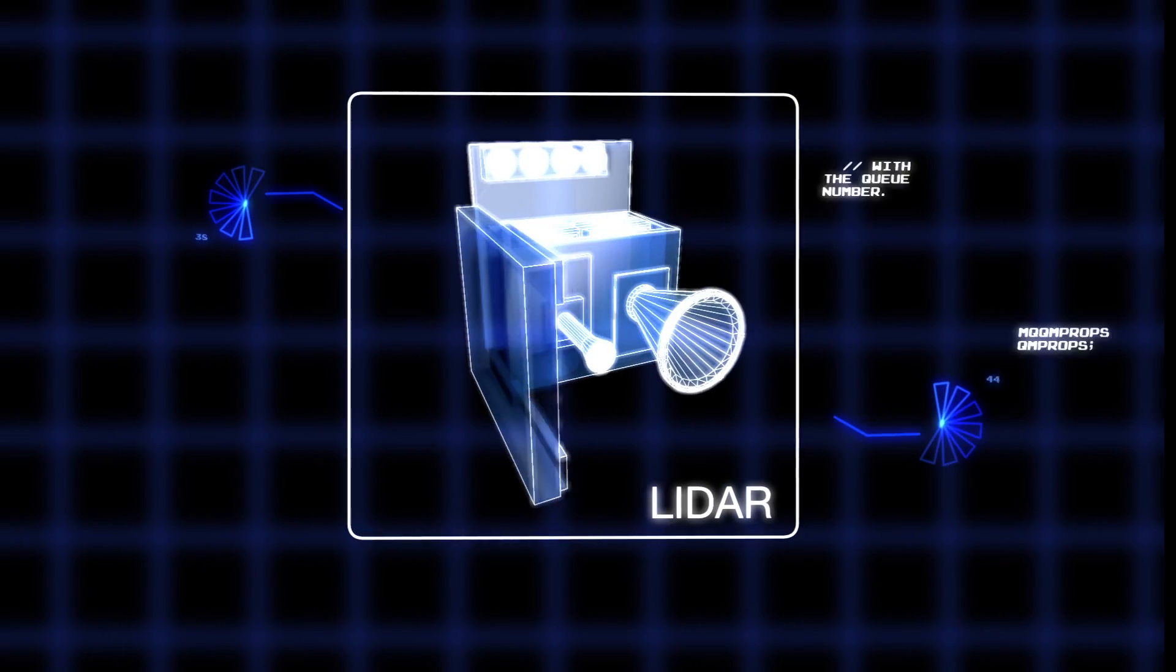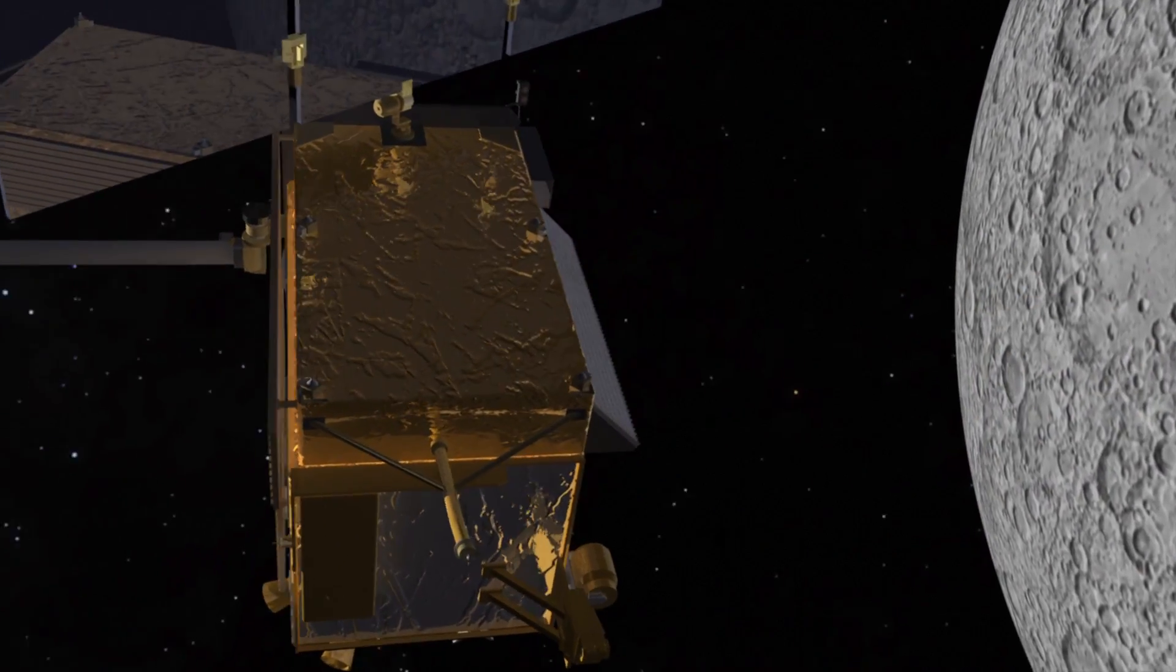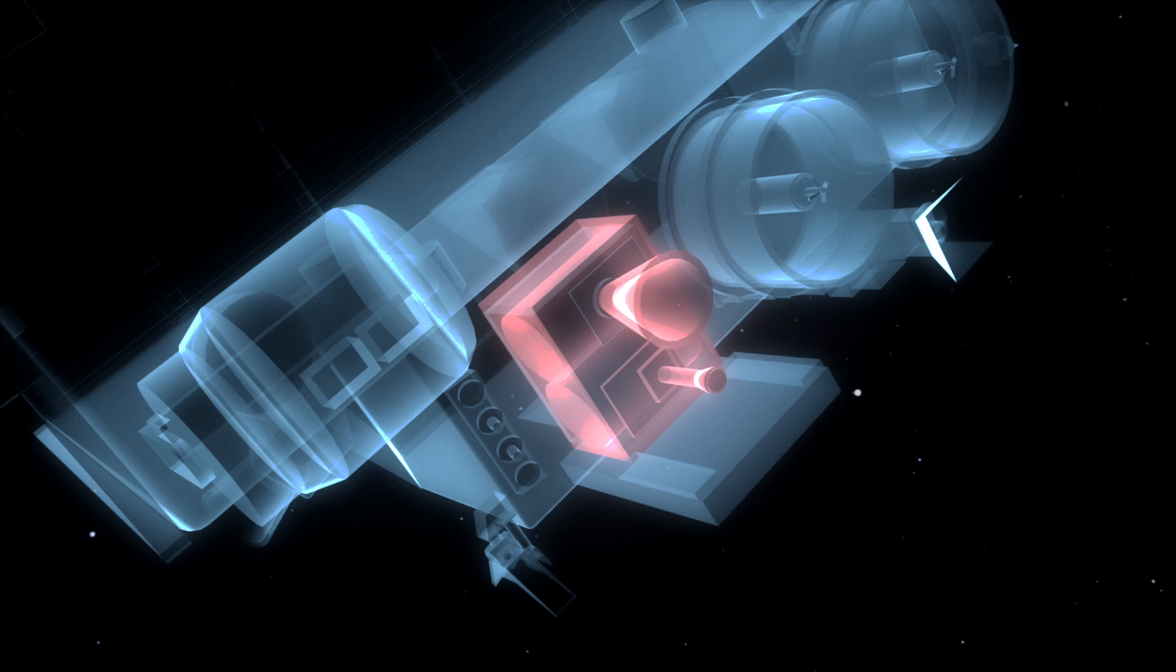To find out, NASA scientists can use a precise measuring tool called LIDAR. Mounted on a satellite orbiting high above a planet, LIDAR instruments are able to accurately measure the distance between the instrument and the landscape below using laser pulses.